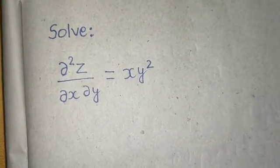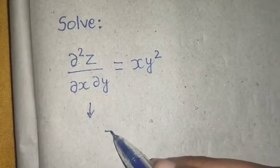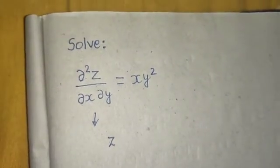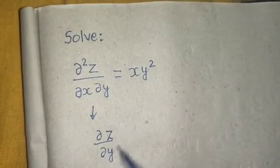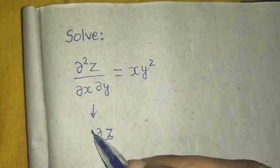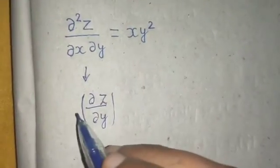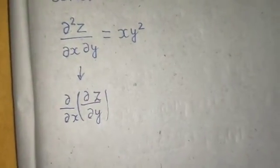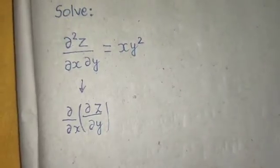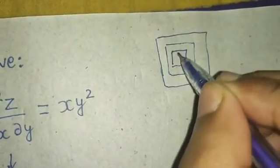To understand what direct integration is, I have made a small concept of gift wrapping and unwrapping. If you see that it would have been just Z equals to something, what you did is you first partially differentiated with respect to Y to get del Z by del Y, and then again partially differentiated with respect to X to get this. So we don't know what Z equals — a gift was wrapped two times but we don't know what is inside.